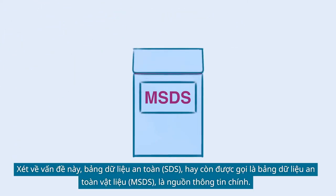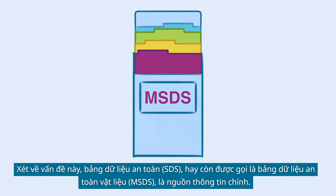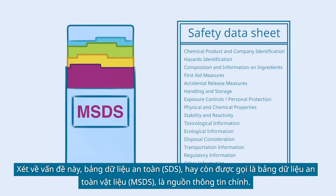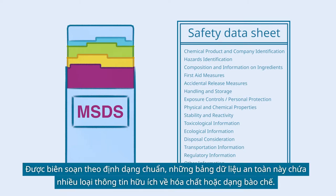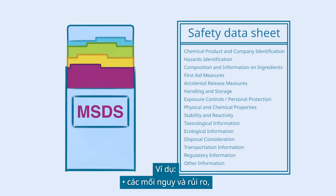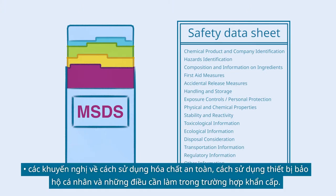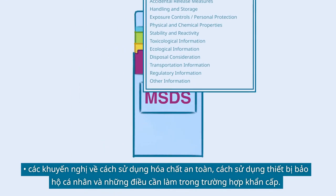In this regard, Safety Data Sheets, also known as Materials Safety Data Sheets, are the key source of information. Compiled in a standardized format, these Safety Data Sheets contain all kinds of helpful information about the chemical substance or formulation — for example, the hazards and risk, recommendations on the safe use of chemicals, personal protective equipment and what to do in an emergency.